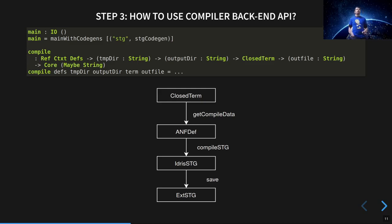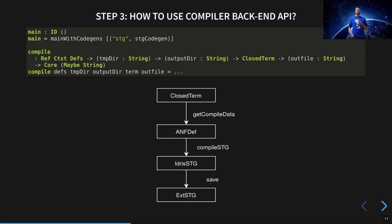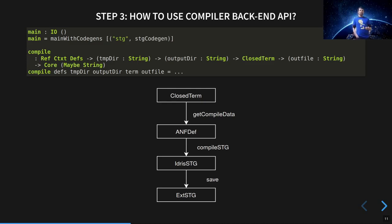What happens when you compile an Idris program? The compiler invokes your compile function, which receives a closed term, and from that closed term you get the data. Using getCompileData, you select which IR you are subscribing to — I subscribe to the ANF definition, which gives you a list of name-definition pairs. Then you have to implement a function to compile them; for me that was the compileSTG function. I mirrored the external STG definitions in Idris and called them Idris-STG, then used those to generate external STG definitions in a binary format to be parsed by the external STG compiler.